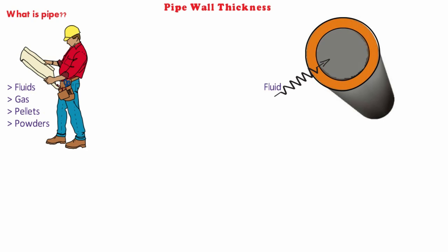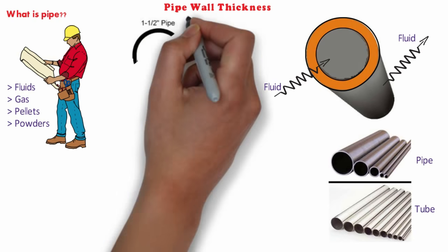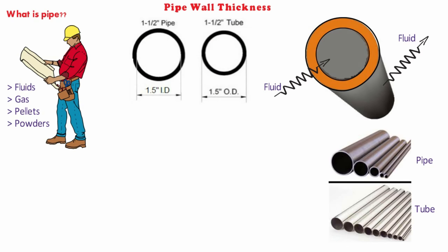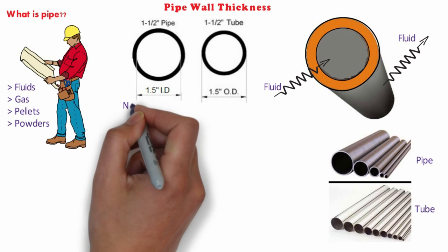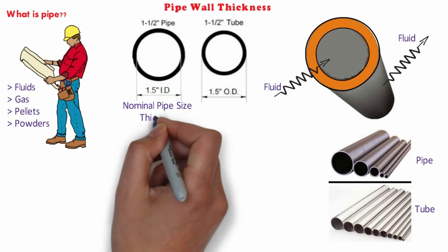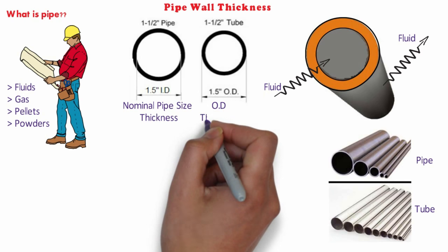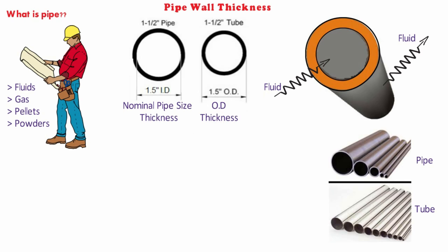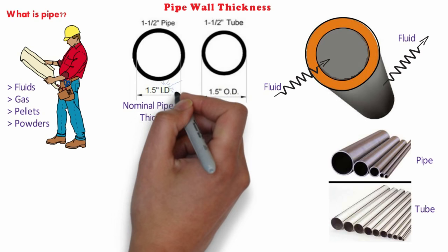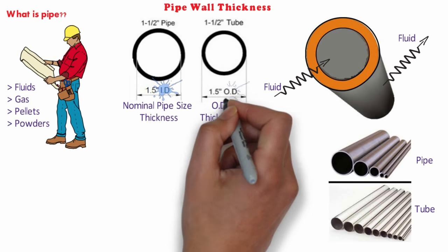One might wonder what is the difference between a pipe and a tube, but there is in fact a difference. The main difference lies between their thickness and the way of defining them. Pipe is defined on the basis of nominal pipe size (NPS) and thickness as schedule, whereas tubes are defined on the basis of outside diameter (OD) and thickness in millimeters. In simple terms, pipe is defined by its internal diameter (ID) and tube by its outside diameter (OD).